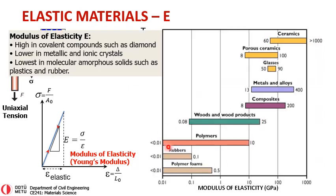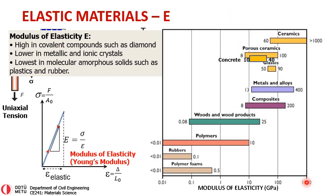If we were to look at the modulus of elasticity of various materials, it is high in covalent compounds such as diamond. It is lower in metallic or ionic crystals, and it is the lowest in molecular amorphous solids such as plastics and rubber. You see various materials and their moduli of elasticity — it ranges from 0.01 gigapascals (10 megapascals) up to about 1000 gigapascals. Civil engineering materials like concrete lie in the porous ceramics family.